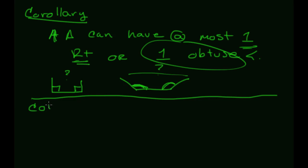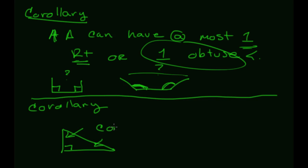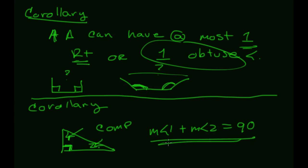The fourth and final corollary: in a right triangle, the other two acute angles must be complementary — meaning their measures add up to 90. If the whole triangle sums to 180 and the right angle accounts for 90, then of course the other two must add up to 90, making them complementary.